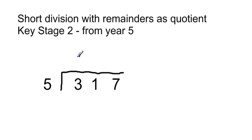So we're doing it in exactly the same way, making sure the children know the times table that they're using. How many fives in 3? It won't go. How many fives in 31? That's 6 with one remainder.